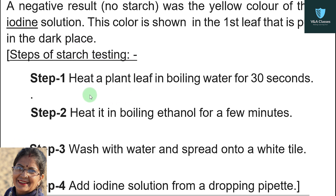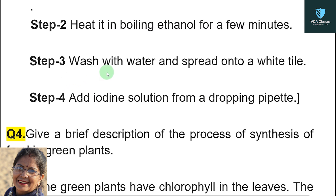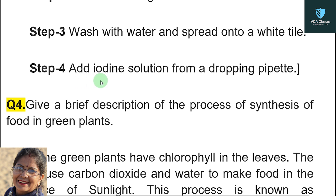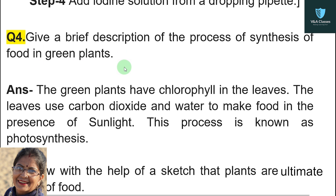Steps of starch testing: Step one — heat a plant leaf in boiling water for 30 seconds. Step two — heat it in boiling ethanol for a few minutes. Step three — wash with water and spread onto a white tile. Step four — add iodine solution from a dropping pipette.